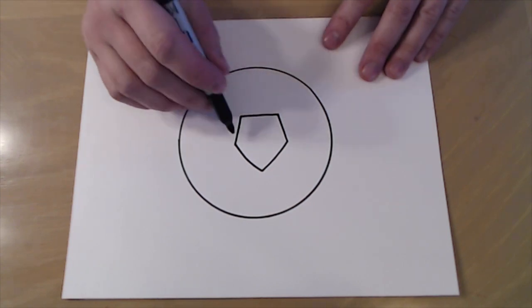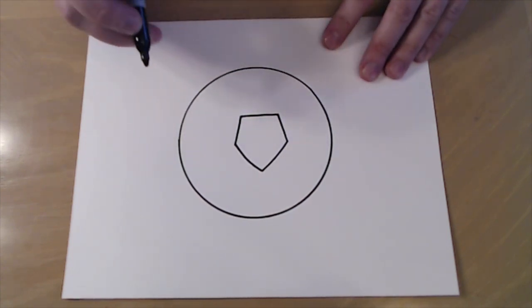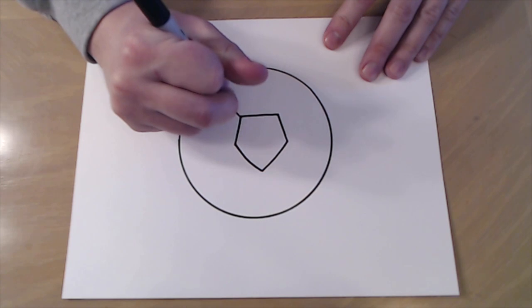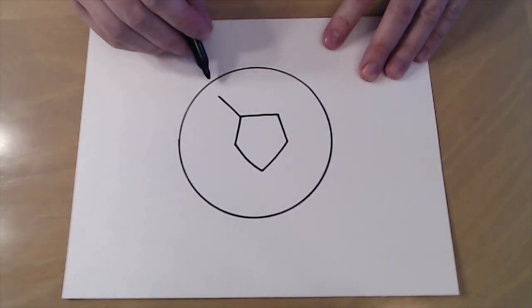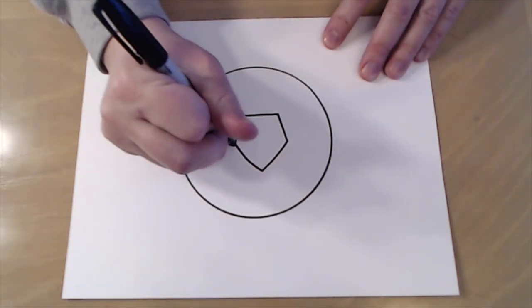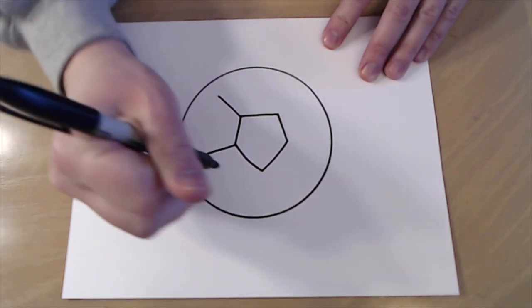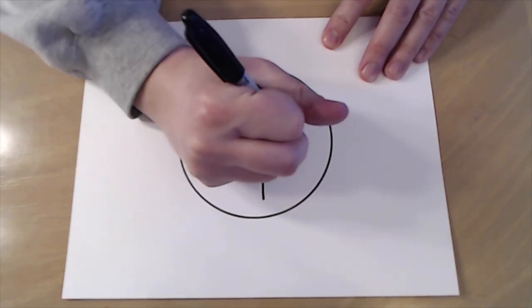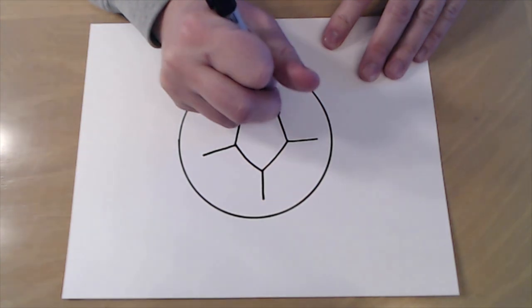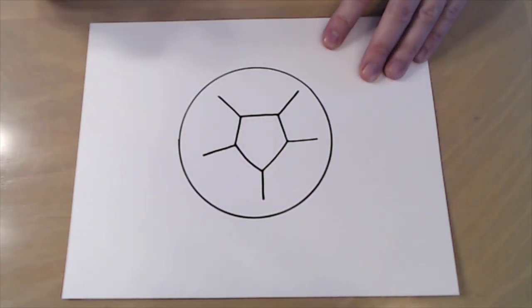So that's the start of it. Now in each one of these corners you want to draw a line. So I'm going to make a line go out and I'm going to stop before I get to the edge of my circle. And I'm just going to draw one on each side just like that.